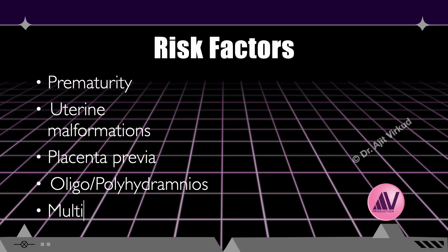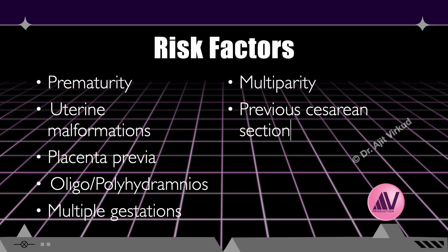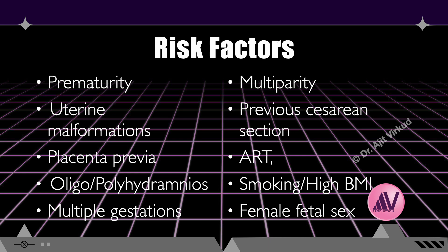Multiple gestation — twins or higher-order multiples — has a higher incidence of breech due to limited space. Laxity of the uterine wall in multiparous women may increase the risk. Previous caesarean section carries a higher risk of breech in women with a history of caesarean for breech or other indications. Assisted reproductive technology, smoking, and high maternal BMI have also been implicated. Surprisingly, female fetuses are known to have a higher incidence of breech presentation.